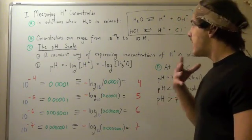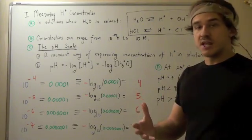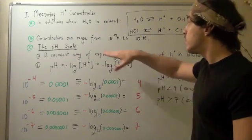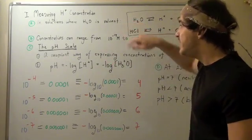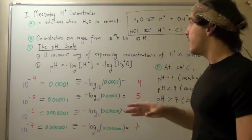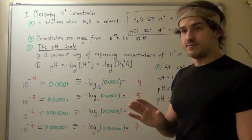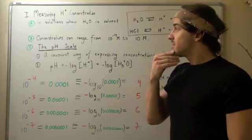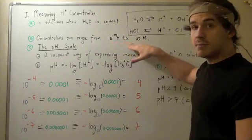Now we can measure the concentrations in terms of molar amount, but the values we get can range from anywhere from 10 to the negative 14 molar. That's a very small number. That's 1 divided by 100 trillion. And they could become as large as 10 molar. So this becomes a problem.